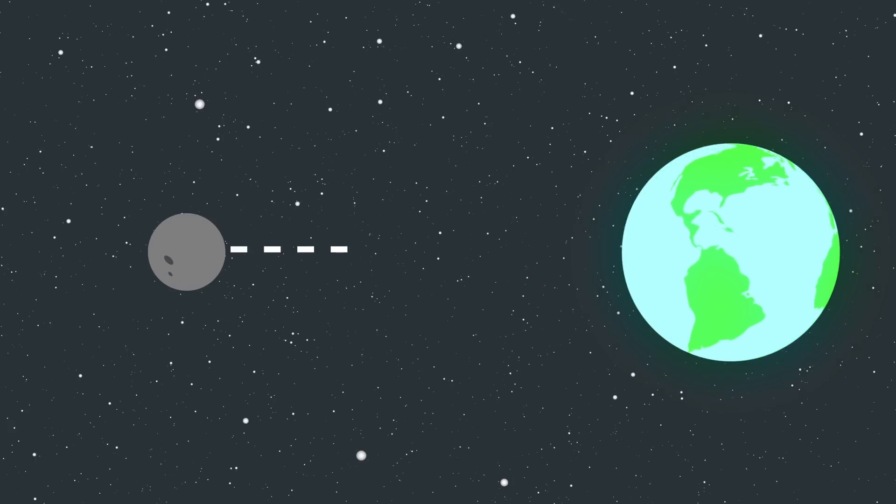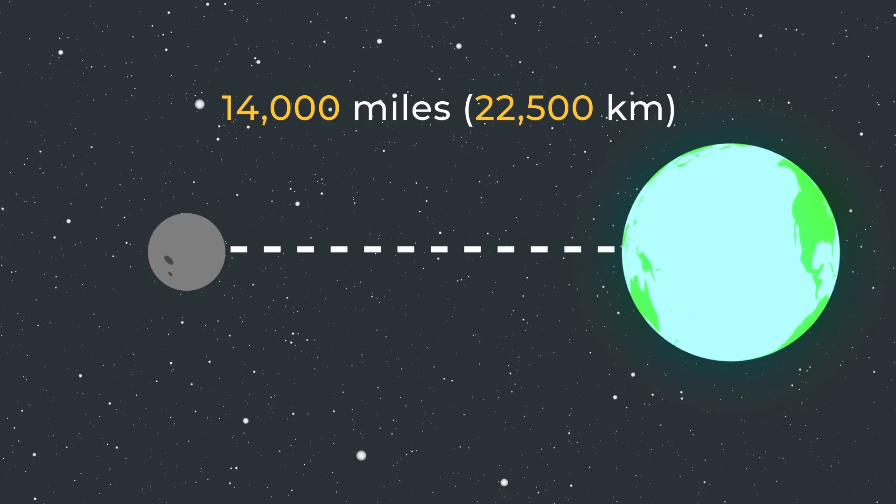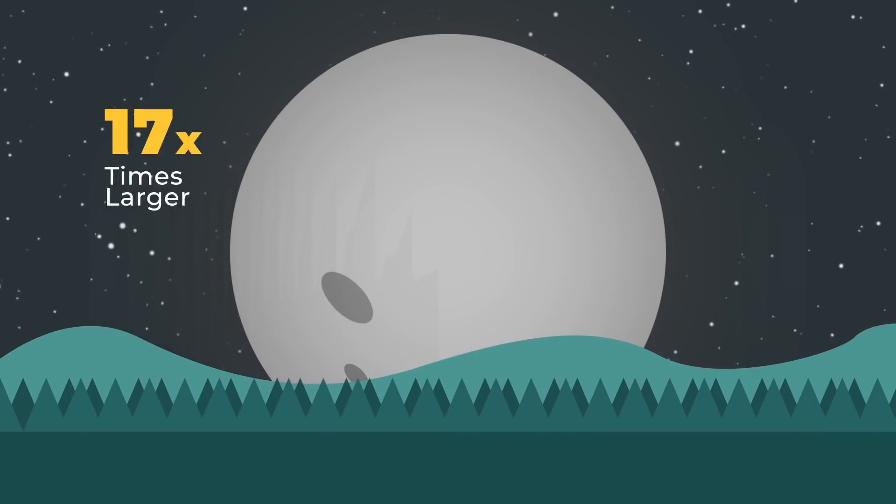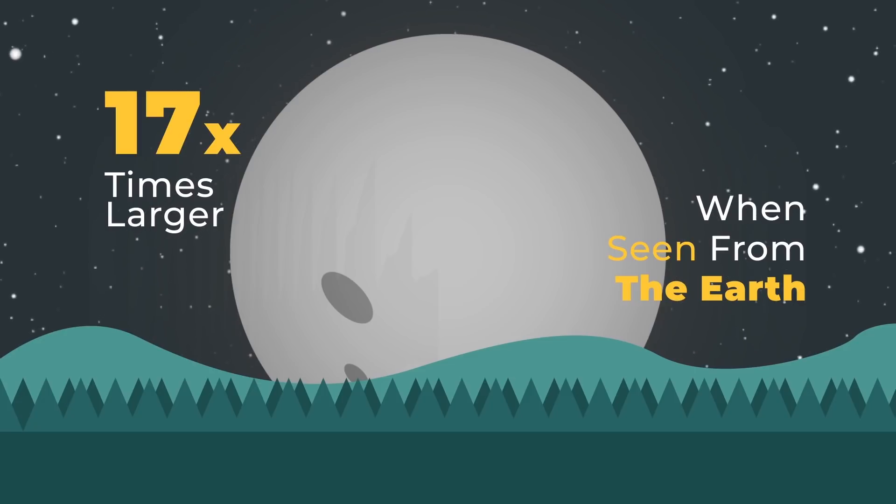When the moon was created it was just 22,500 kilometers away from the earth. And if you were to look at the moon from the earth it would have appeared 17 times larger. And it would have been awesome.